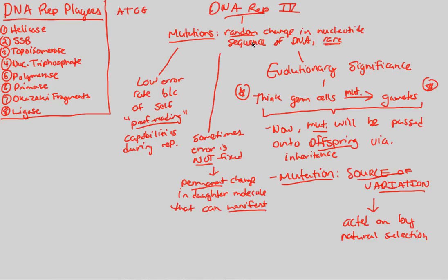To summarize: mutations are random changes in DNA, they are rare, and there's a low error rate because of our self-proofreading enzymes. Sometimes the error is not fixed, creating a permanent change. If that happens in a germ cell that becomes a gamete and combines with another gamete to form a zygote, the offspring will carry the mutation via inheritance. Mutations are a vital source of variation acted on by natural selection — you might have a good or bad mutation. That concludes the DNA lecture.